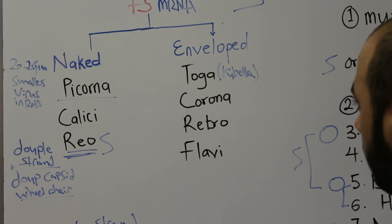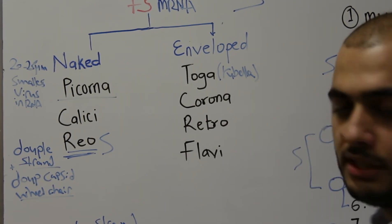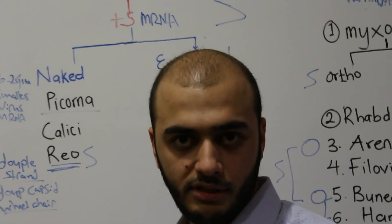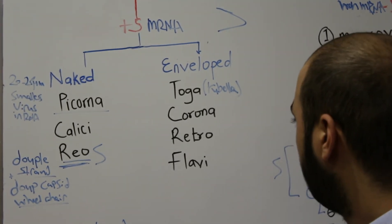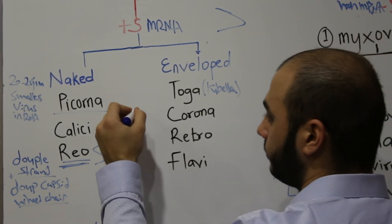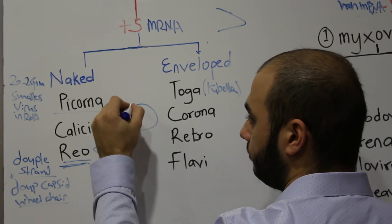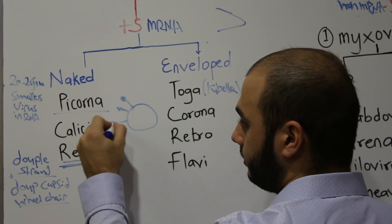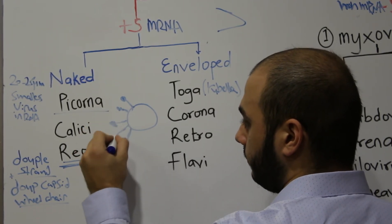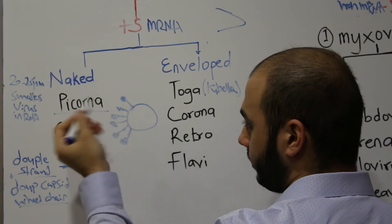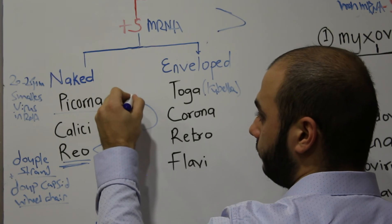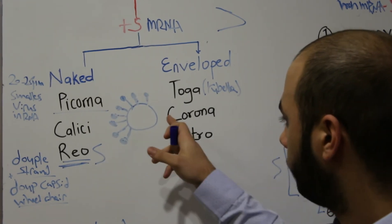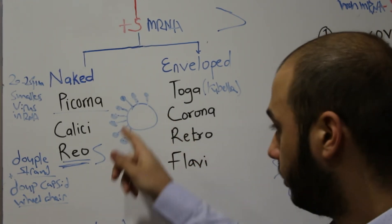Togavirus is the family that contains Rubella virus, but it also contains other viruses associated with other diseases, which we'll discuss specifically in later videos. Coronavirus is the only RNA virus that has club-shaped or beta-like projections — not antennas like adenovirus, but sticks bulging out from the envelope with club-like ends. This distinctive shape is typical of coronavirus and the only virus that has these beta-like projections.